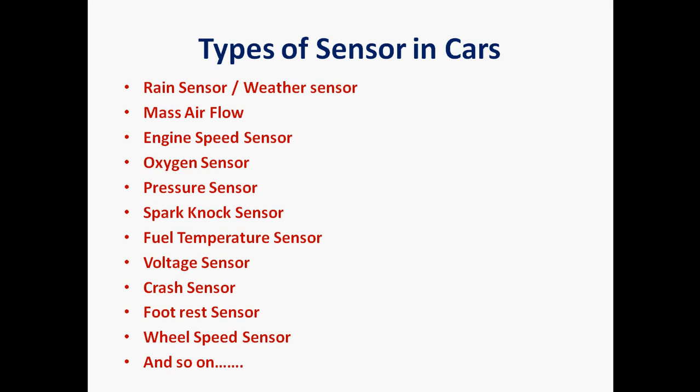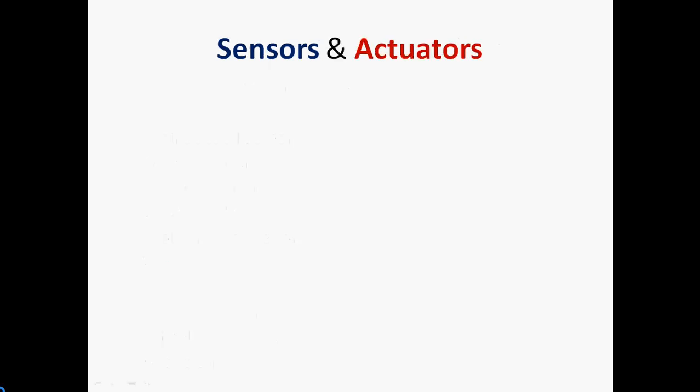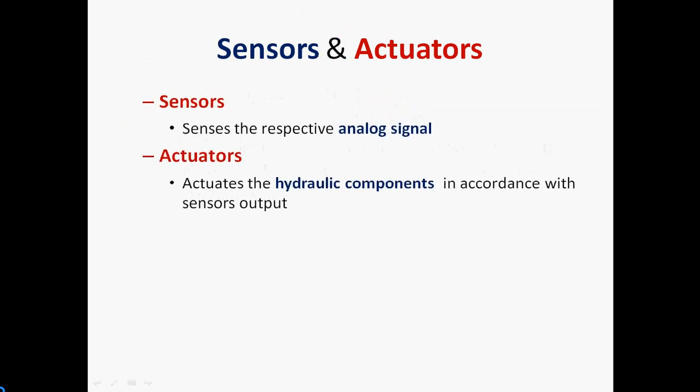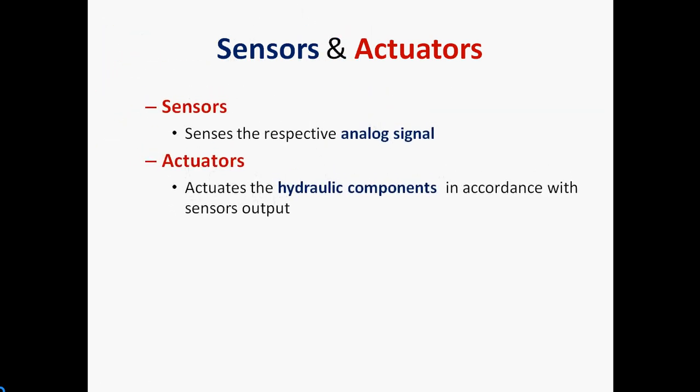We have many more sensors apart from these, but for your understanding I have given just a few. How do sensors and actuators correlate? In simple terms, the sensor senses the respective analog signal. For example, if you have an engine sensor, it will send the engine analog signal. If it is a temperature sensor, it will sense heat — heat is nothing but an analog signal.